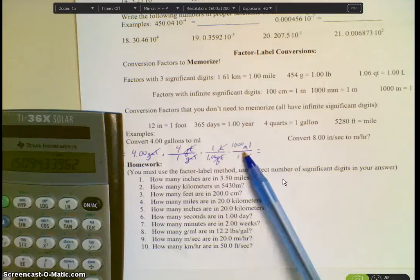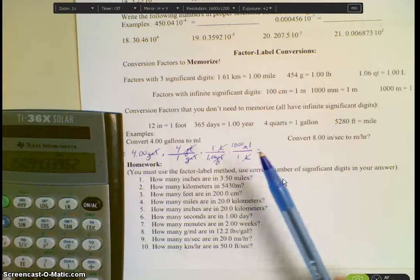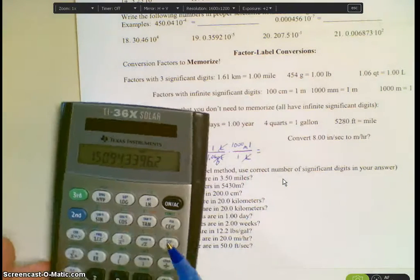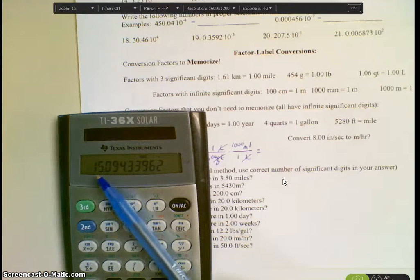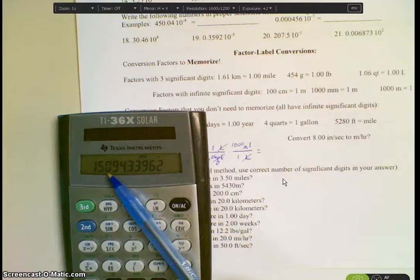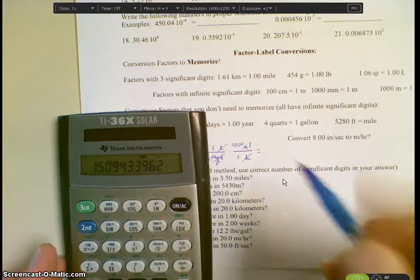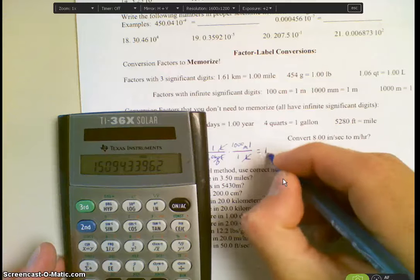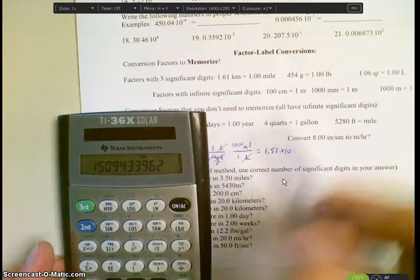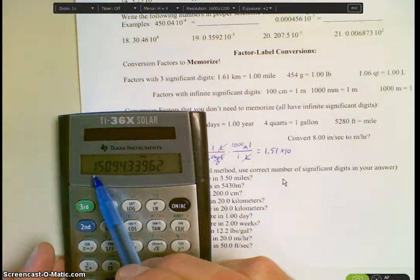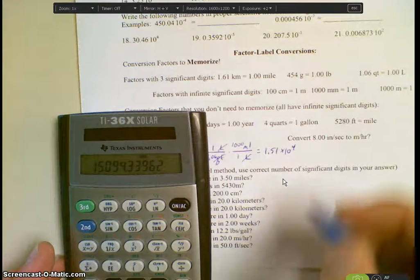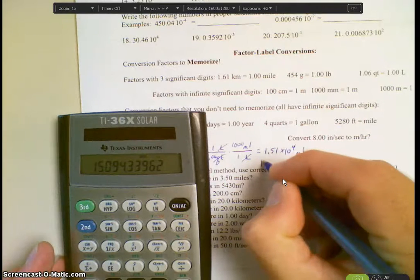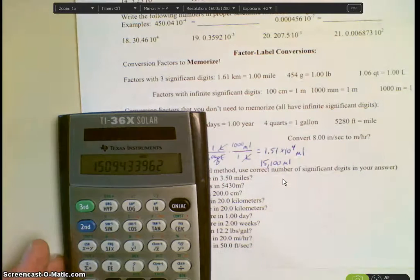So I've got 3, 3, infinite. And these are infinite. So my least number is 3. So when I look at my calculator, I'm going to round to the third digit. So in this case, it's 15,094. I'm going to round to 15,100. Or I could write it in scientific notation as 1.51 times 10 to the 1, 2, 3, 4. Everybody see where you can move the decimals there? So 1.51 times 10 to the 4th milliliters. Or you could write 15,100. Either one is acceptable.